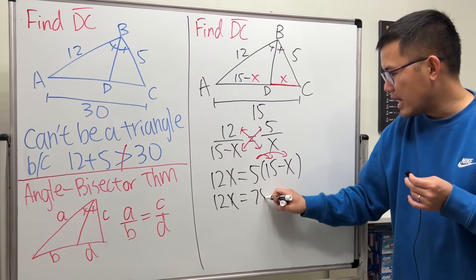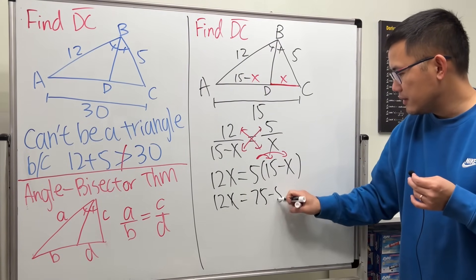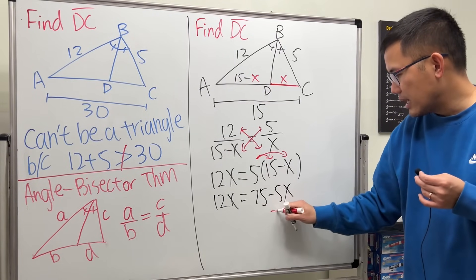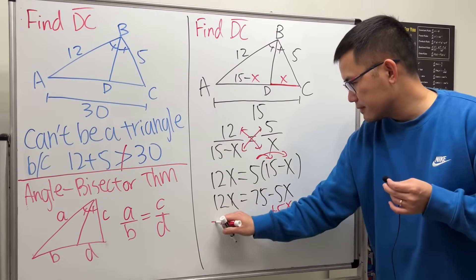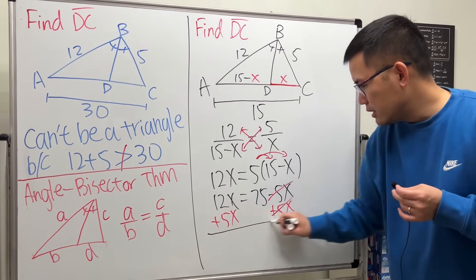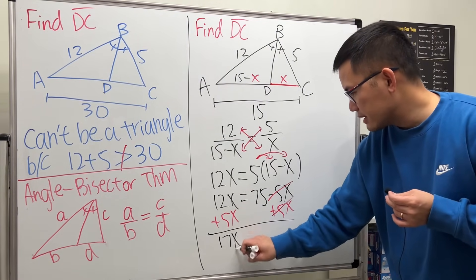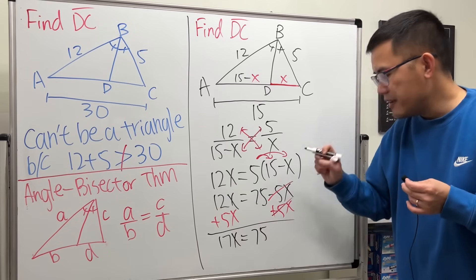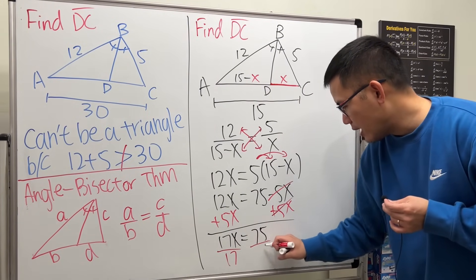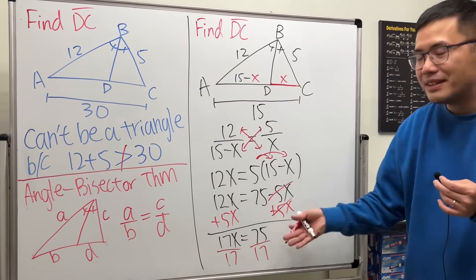And then let's just add 5x on both sides. This and that cancel, and we see that 17x equals 75. And finally, just divide 17 on both sides.